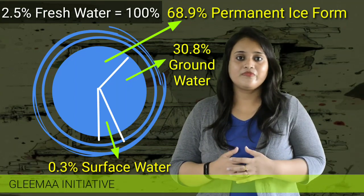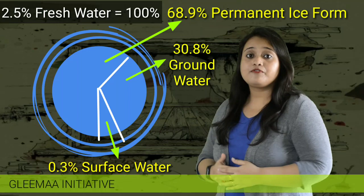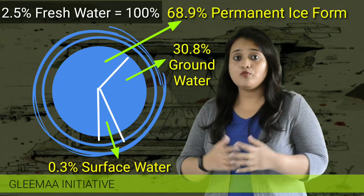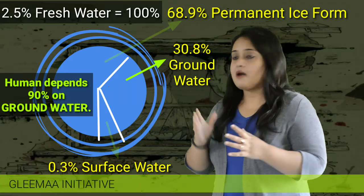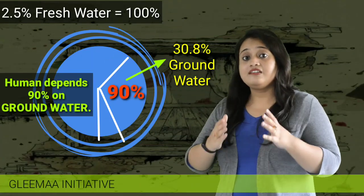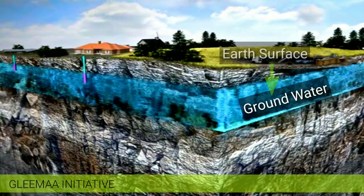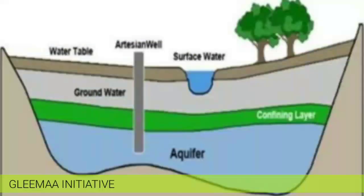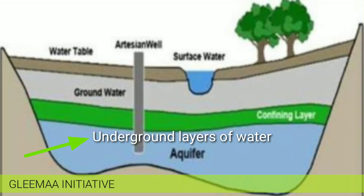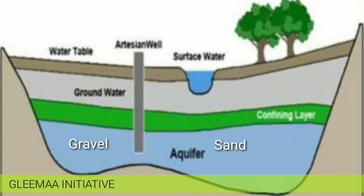Within this 2.5% of fresh water available in our Earth, 90% of humans directly depend upon ground water, which leads to the serious global problem of ground water deflation. Ground water is the water present beneath our Earth's surface in pore spaces in soil and in the fractures of rock formations in aquifers. Aquifers are underground layers of water-bearing permeable rock, rock fractures, or unconsolidated materials containing gravel, sand, and silt.